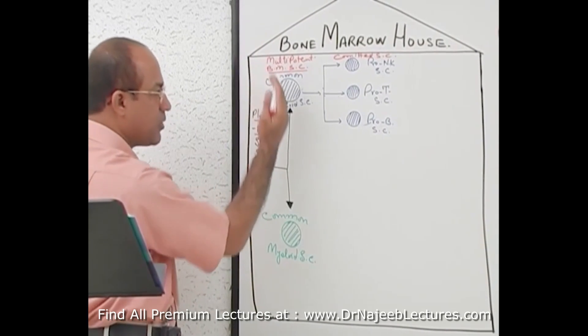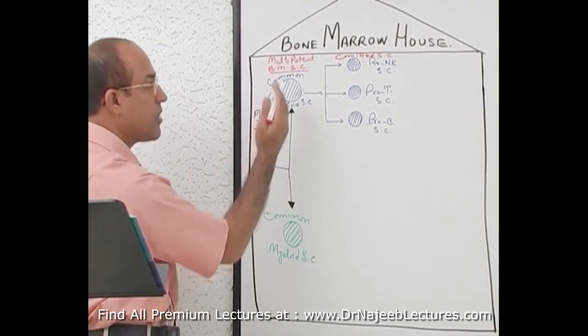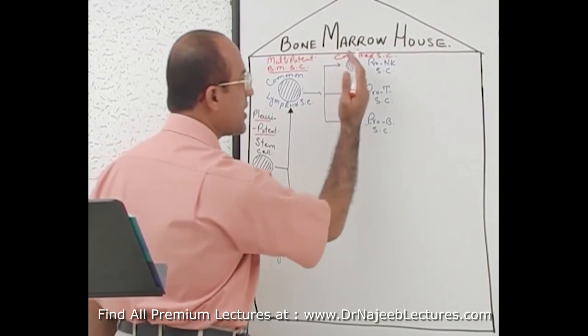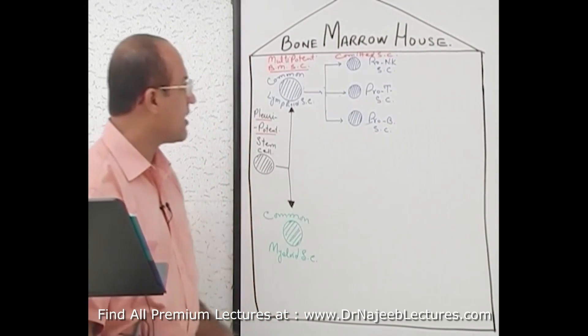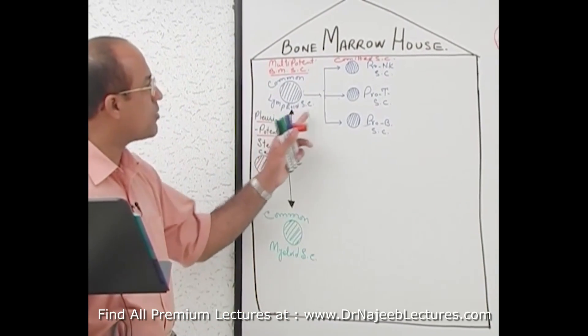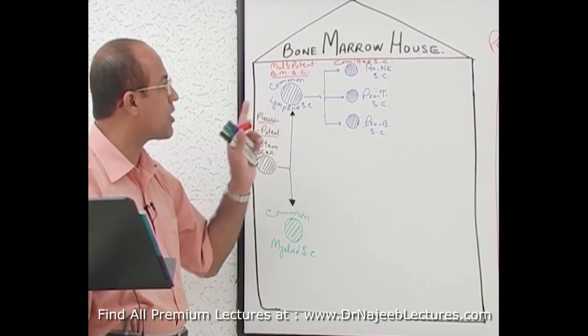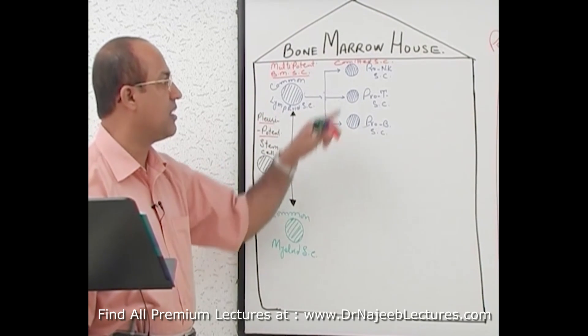A pluripotent stem cell divides into multipotent stem cells. Multipotent stem cells can divide into committed stem cells. Here, the committed stem cells are derived from the common lymphoid stem cell.